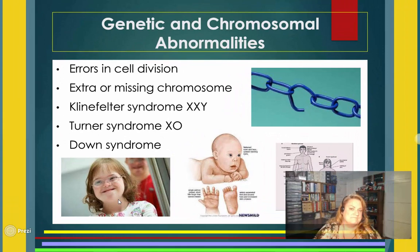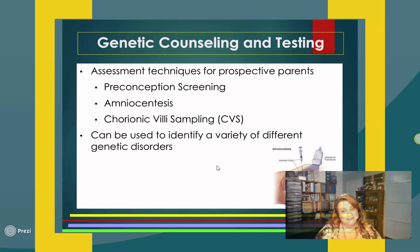To recap: Klinefelter's is XXY, Down syndrome is XYY, and Turner syndrome is X missing — just one X chromosome. There are so many different things that can happen — it's called life. Genetic counseling is where people can speak with a social worker and discuss options.